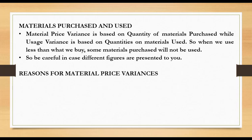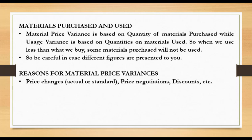Reasons for material price variance — why might there be a difference in prices? This could be due to price changes: if the actual price rises more than the original standard, this leads to an adverse material price variance. Standard-wise, if the standard price goes up, it makes the standard price greater than actual, which would be favorable. Price negotiations also matter — the better you negotiate, the lower the actual cost and the more favorable the material price variance. Discounts are another factor.